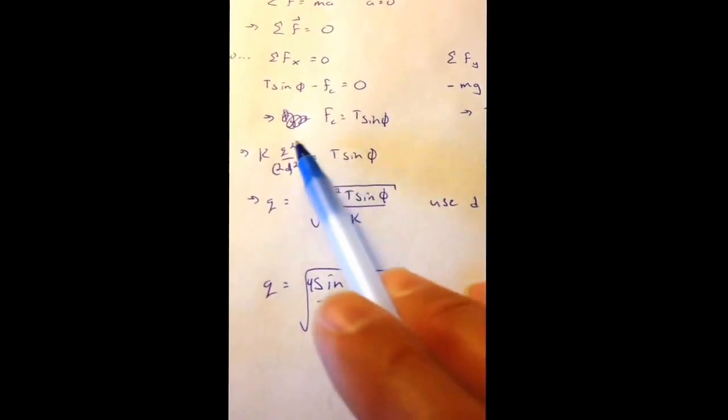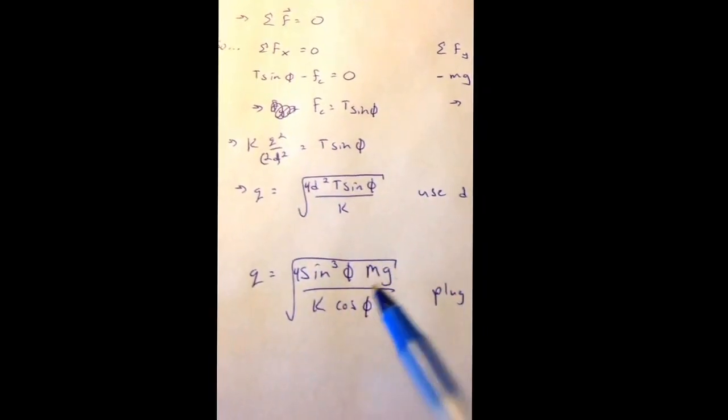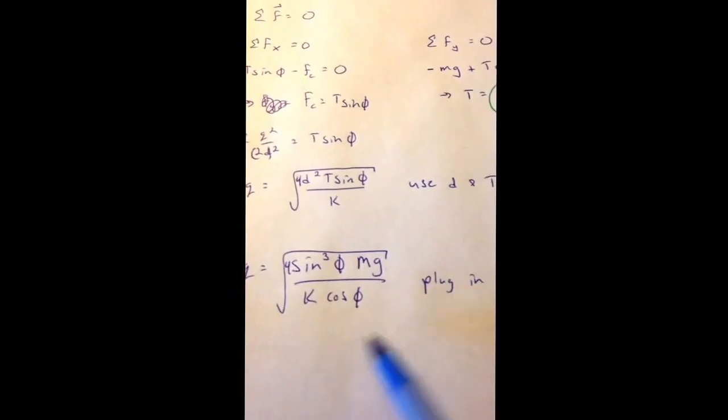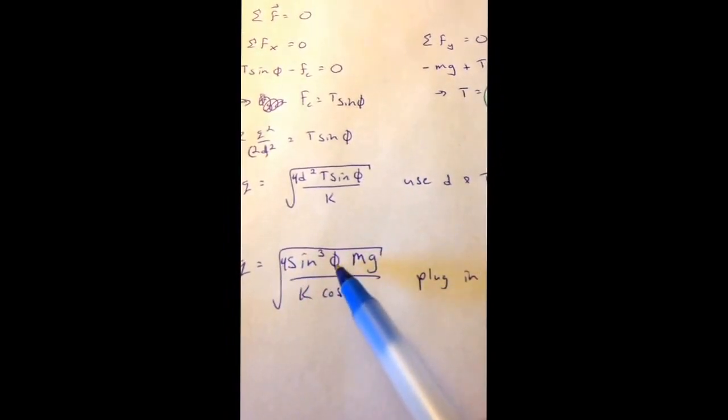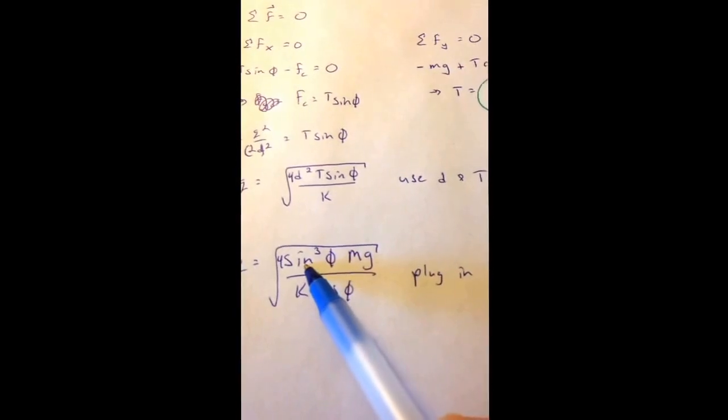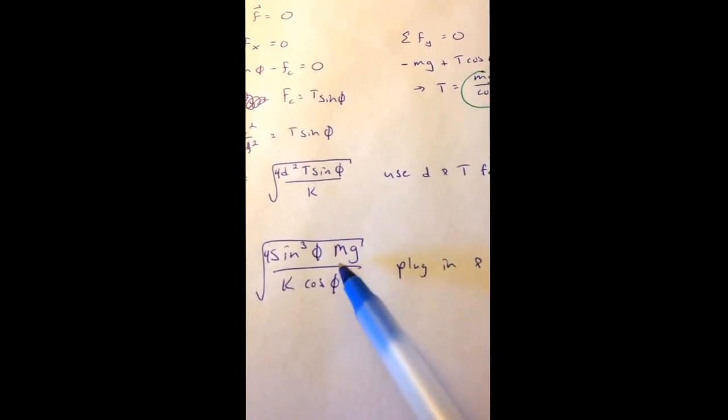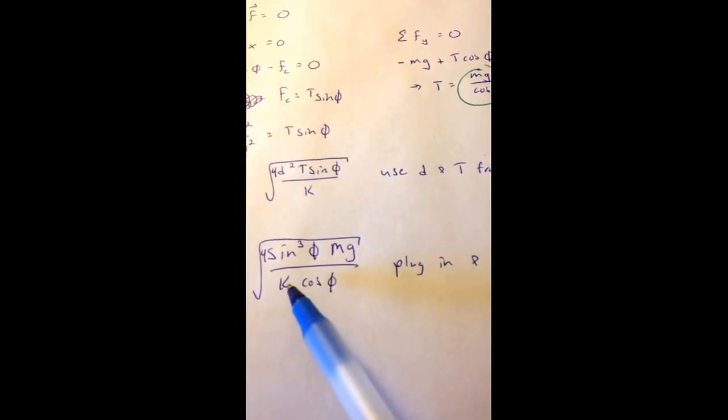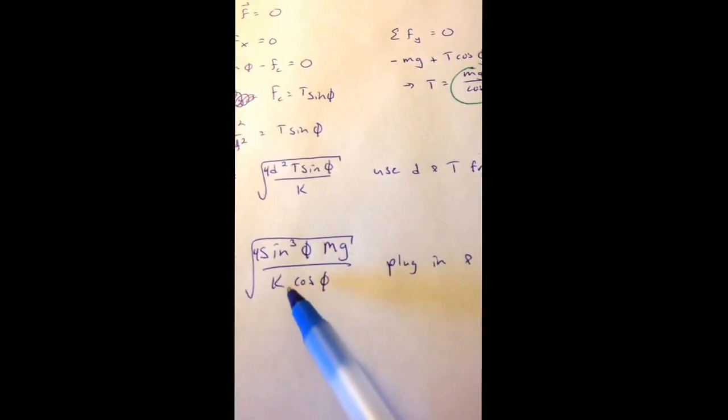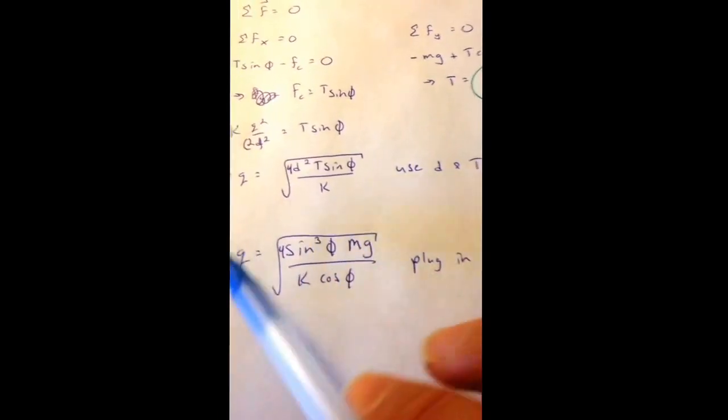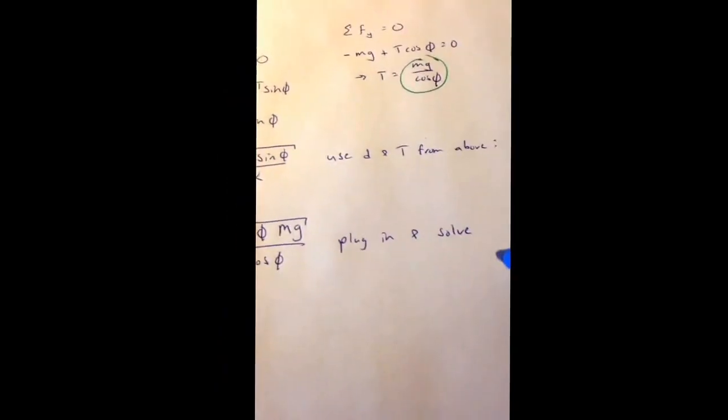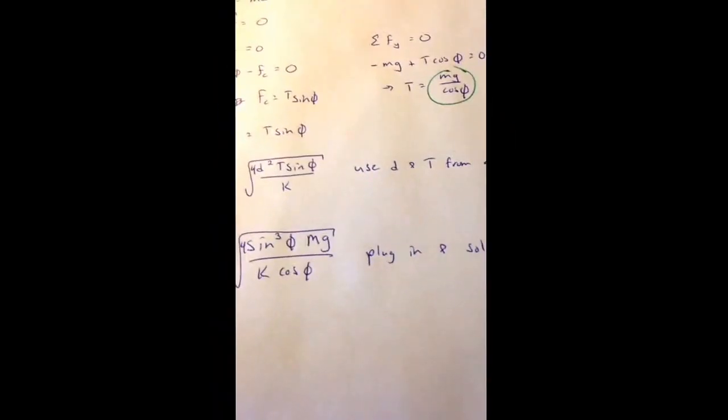And then because q is squared in this equation, I'm taking the square root of all that. And you have numbers for all of this stuff. We know what 4 is. We know what phi is. So we can just plug in the sine of phi there, cubed. We know what the mass is. We know what g is. We know what k is, 1 over 4 pi epsilon naught. And we know what the cosine of phi is. So we just plug all these numbers into our calculator, and out pops q. All right. I hope this helps.